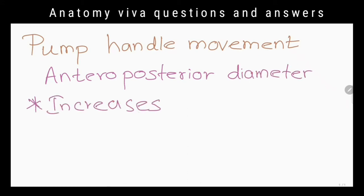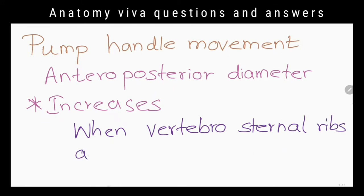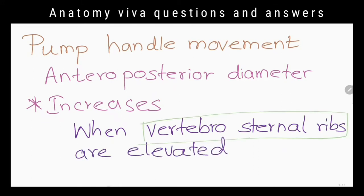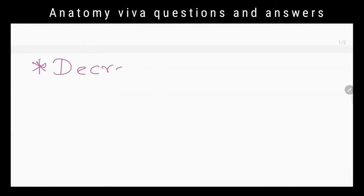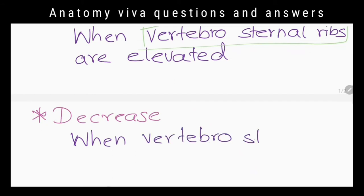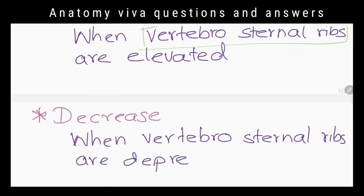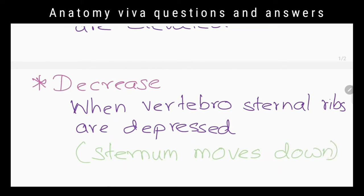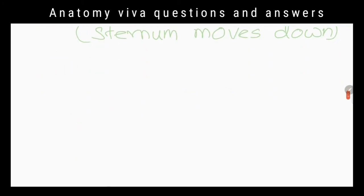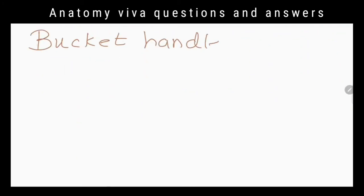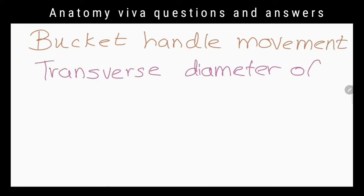What happens in pump handle movement? The anteroposterior diameter of the thorax is increased when vertebrosternal ribs are elevated, as their anterior end is lower than the posterior end. When those ribs are depressed, the sternum moves down and backward, reducing the anteroposterior diameter. What are vertebrosternal ribs? The first to sixth ribs.